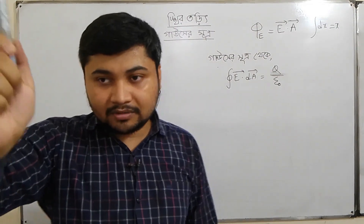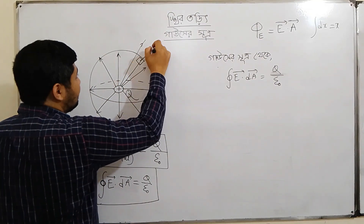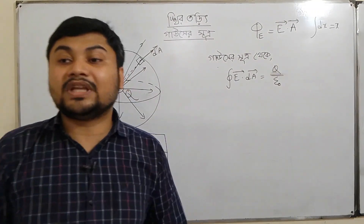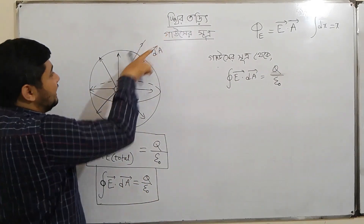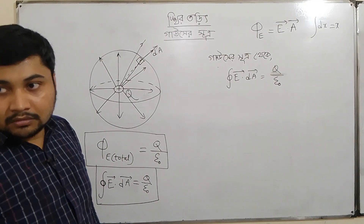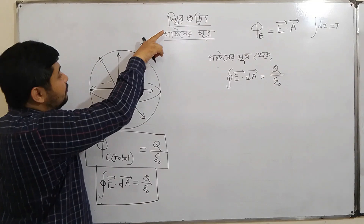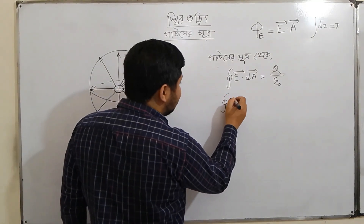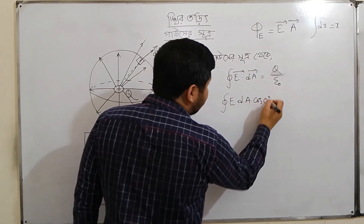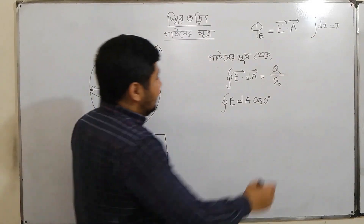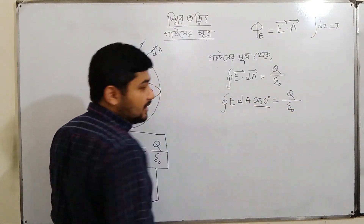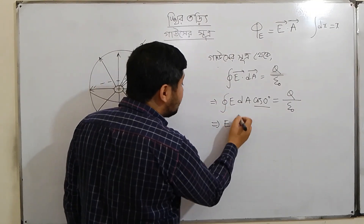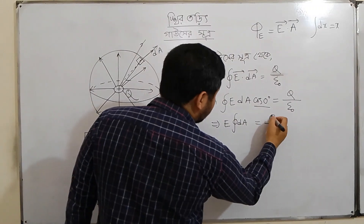In which direction is that area element? It is equal to the outward direction of the sphere. And we call this the outward direction. Now, looking in this direction — what is the angle?